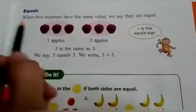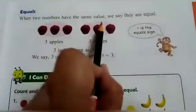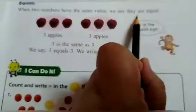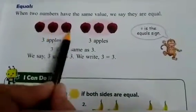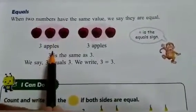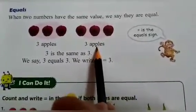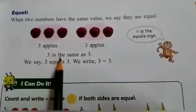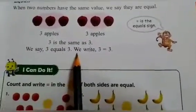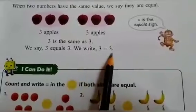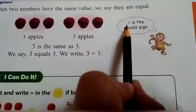Now we are going to do equals. When two numbers have the same value, we say they are equal. Like one, two, three - three apples are here. One, two, three - and three apples are here also. So three is the same as three. So we say three equals three. We write 3 = 3.